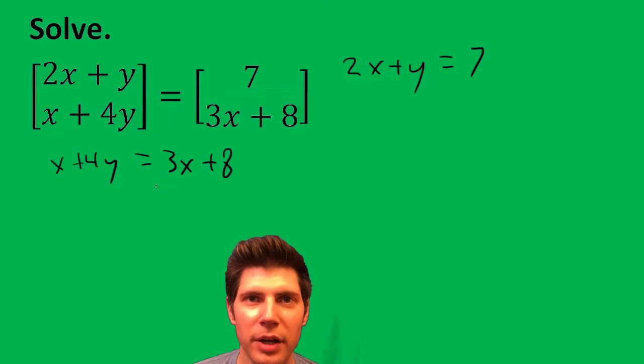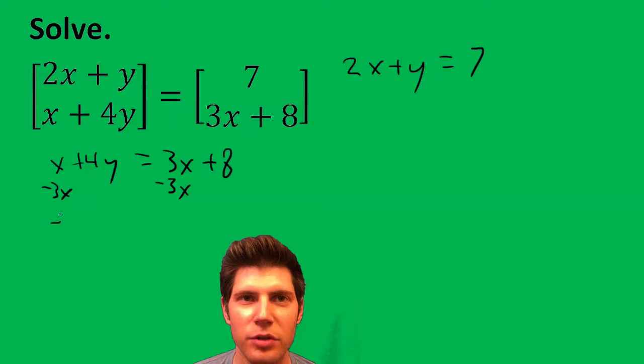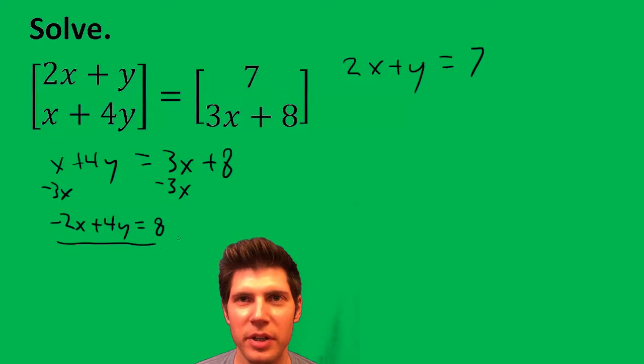So on the bottom I'm going to do minus 3x minus 3x and we get negative 2x plus 4y equals 8. Let's bring this up here.